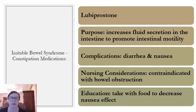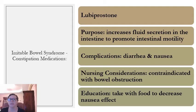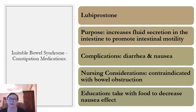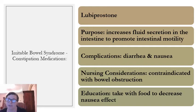For IBS-constipation type, the medication is lubiprostone. It increases fluid secretion like a lubricant in the intestine to promote motility. Complications include diarrhea and nausea. Contraindications include bowel obstruction. Educate patients to take with food to decrease nausea — taking with food also promotes peristalsis and moves contents along, reducing the overwhelming feeling on the GI tract.